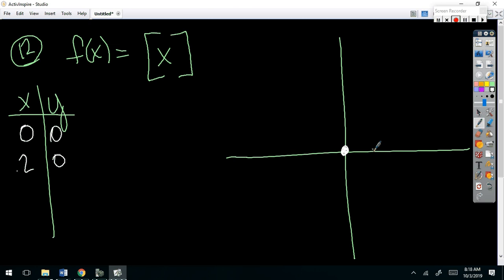When you get above one, right? Well, at one, what is it? One. One is an integer. So, at one, it's jumping up to one. But all of this area in between stays at zero. So, I'm going to do an open dot here because it can't actually be one because at one, it jumps up to one.